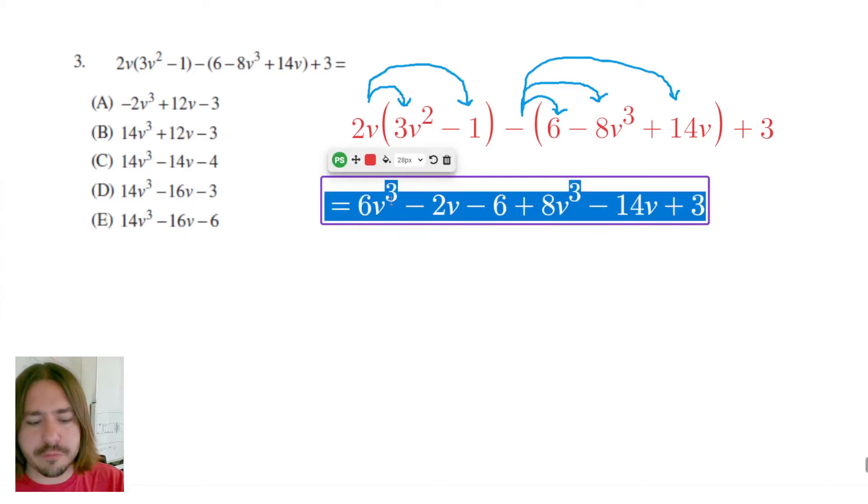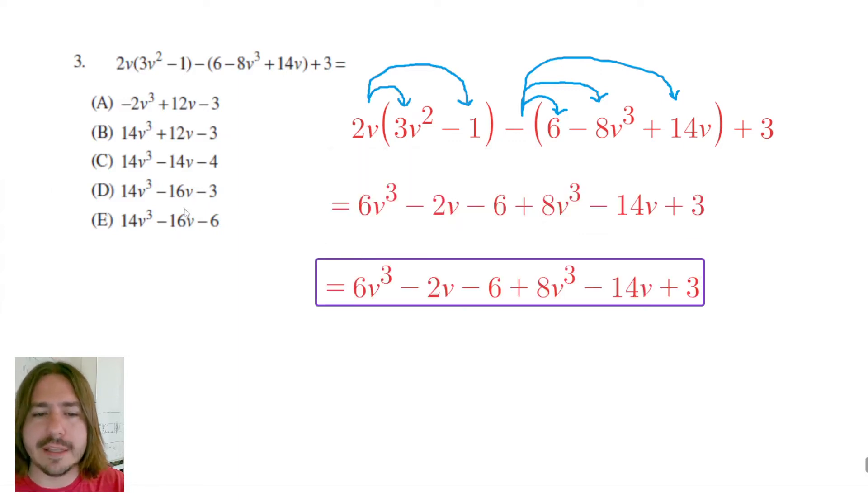After you use the distributive property, you want to combine like terms. So you want to try to identify which terms are like. And what I mean by that is terms are like when they have the same variable or lack of a variable and the same exponent on that variable.